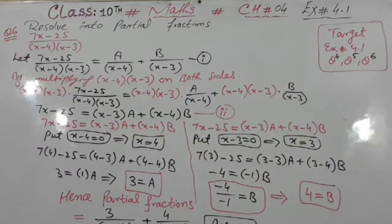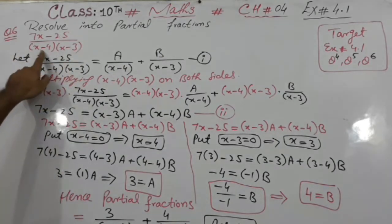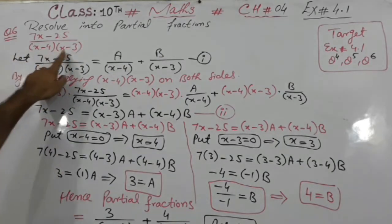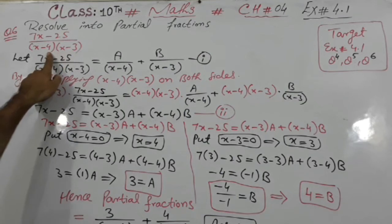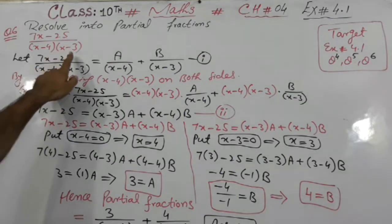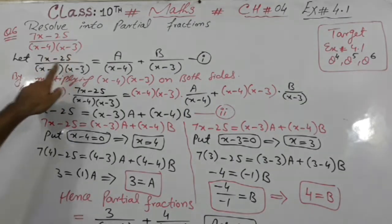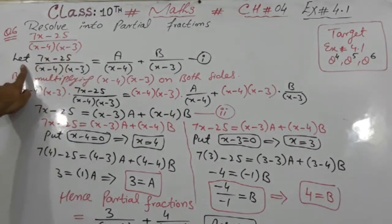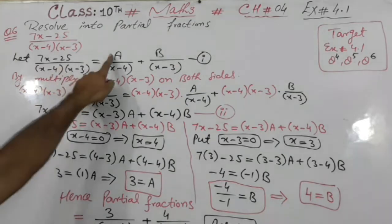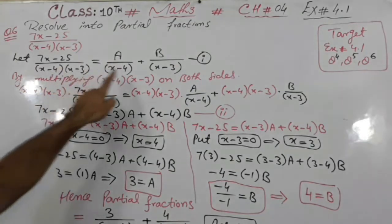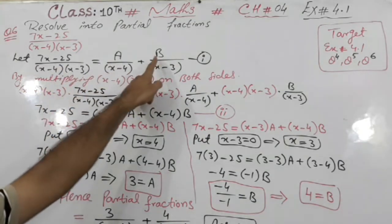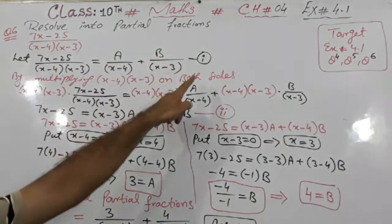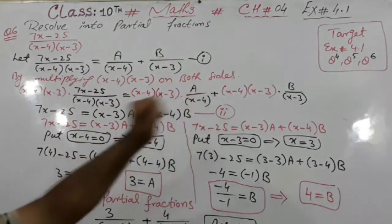Now we have question number 6: resolve it into partial fractions. In this question both brackets are already in single power, so there is no need to convert them. You write it directly in the 'let' form — first bracket gets A and the second bracket gets B. This is our equation number 1.